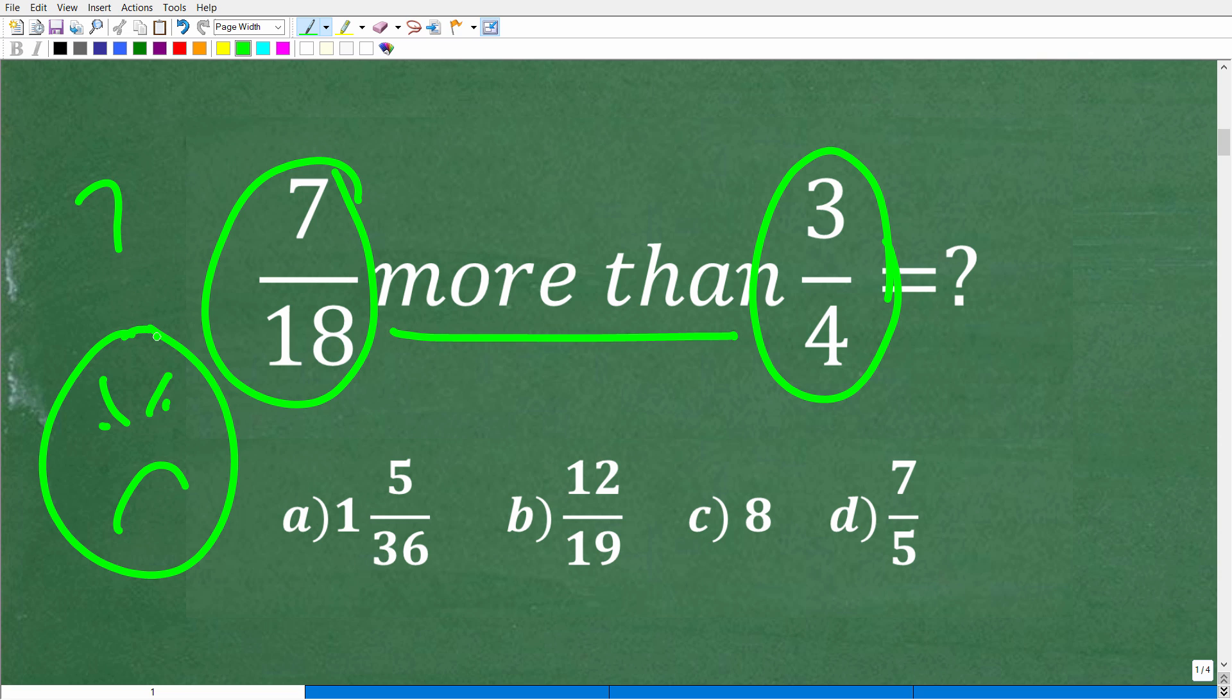So let's go ahead and get into all this right now. So here is our problem. And the first thing that we need to do is interpret what this thing is saying. So we have 7 over 18, we want 7/18 more than 3/4. Now, how do we figure out what this problem is saying?